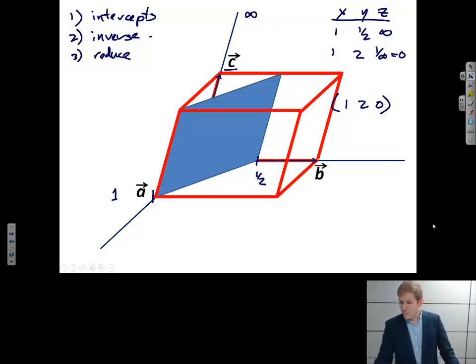So note, if I'm parallel to the C plane, my C index is 0. These are actually usually called hkl indices. So the L index would be 0.